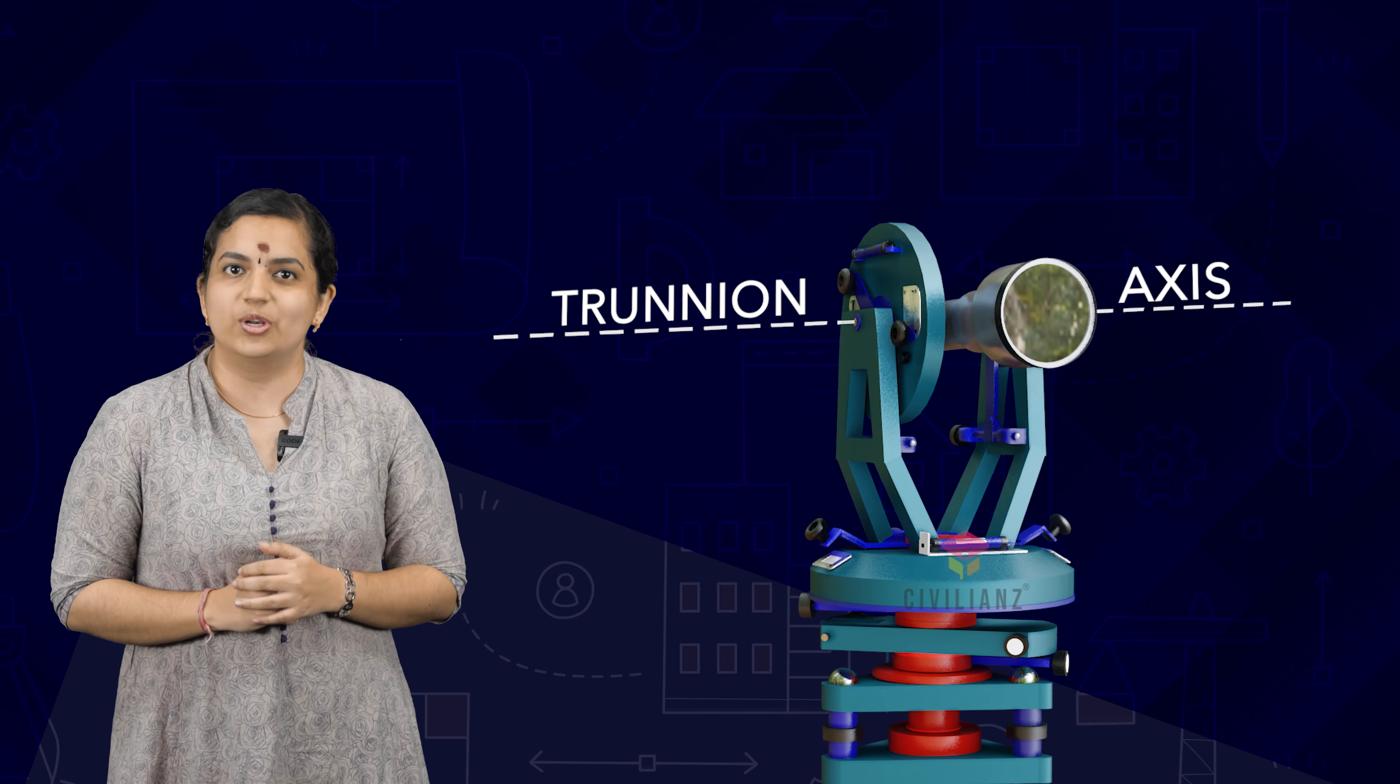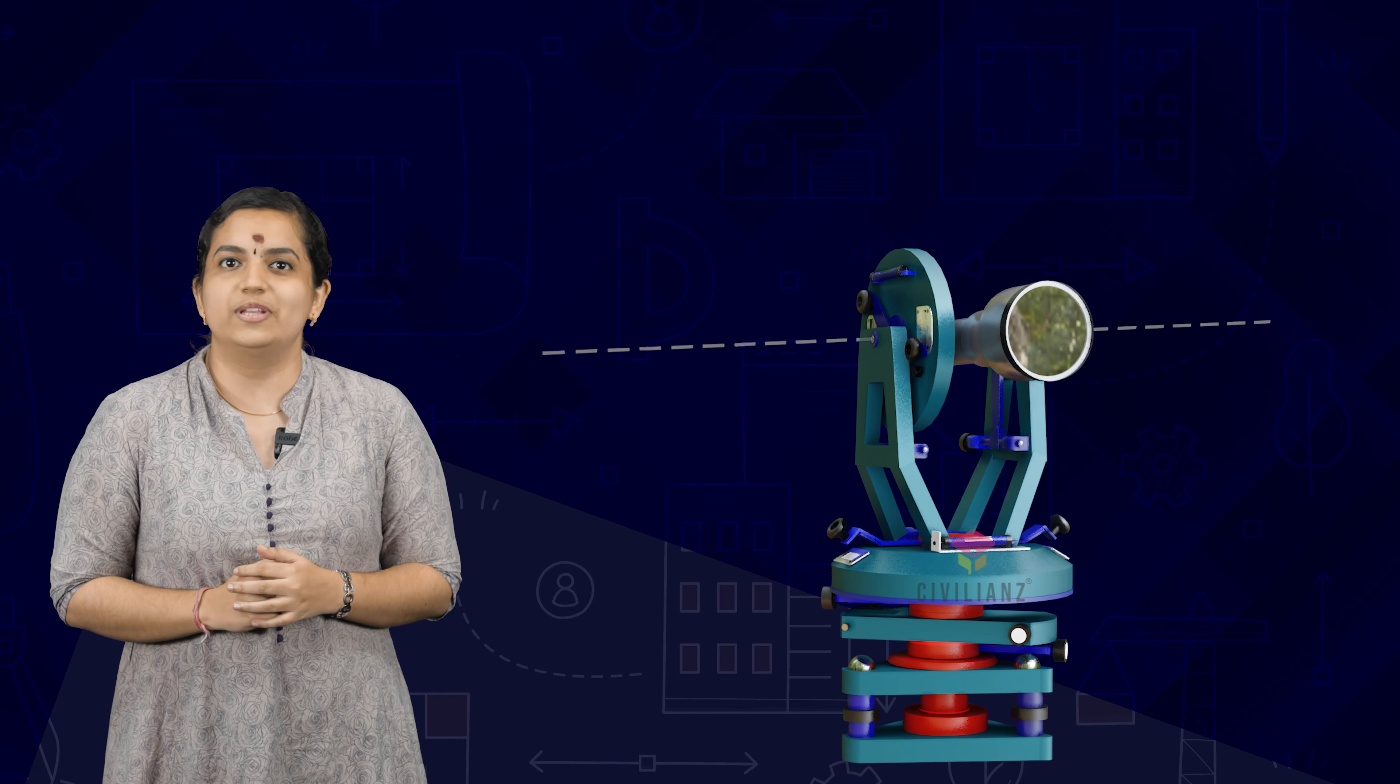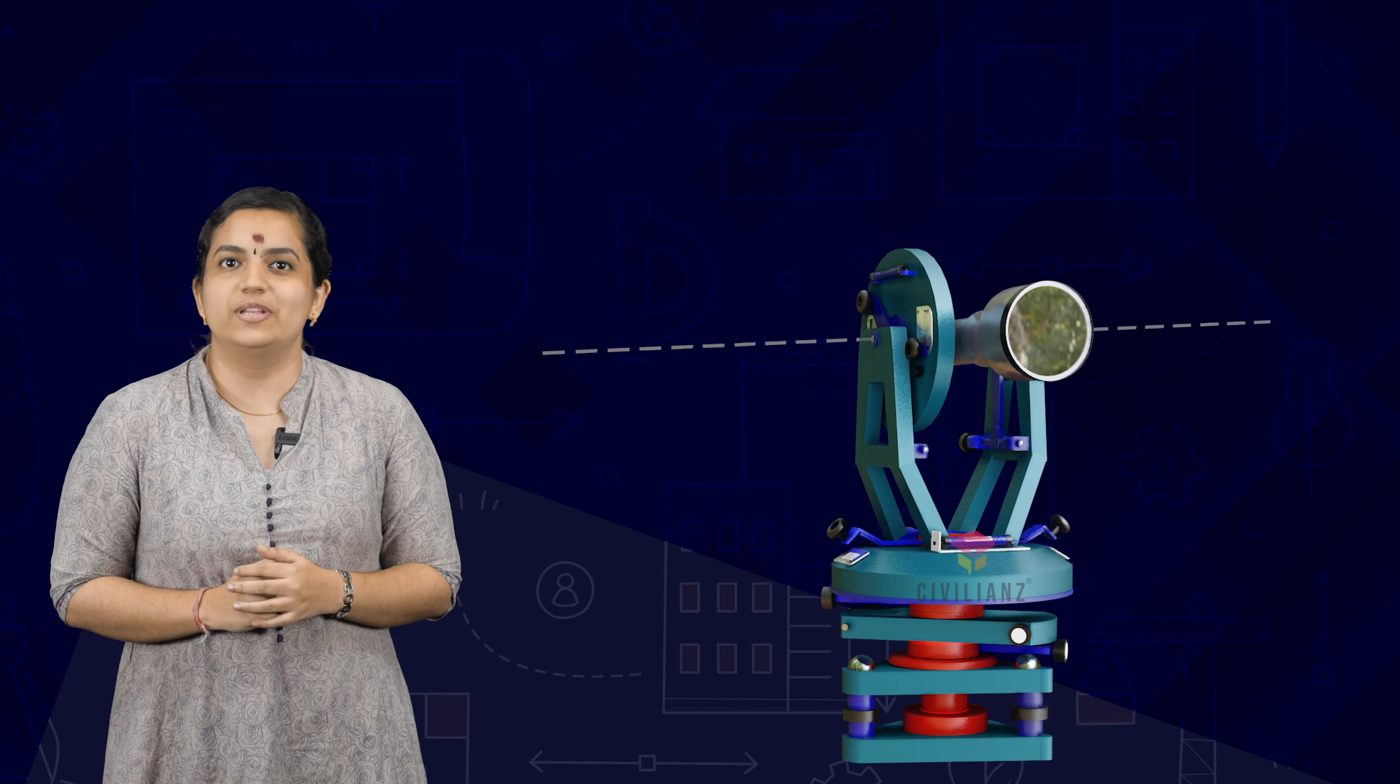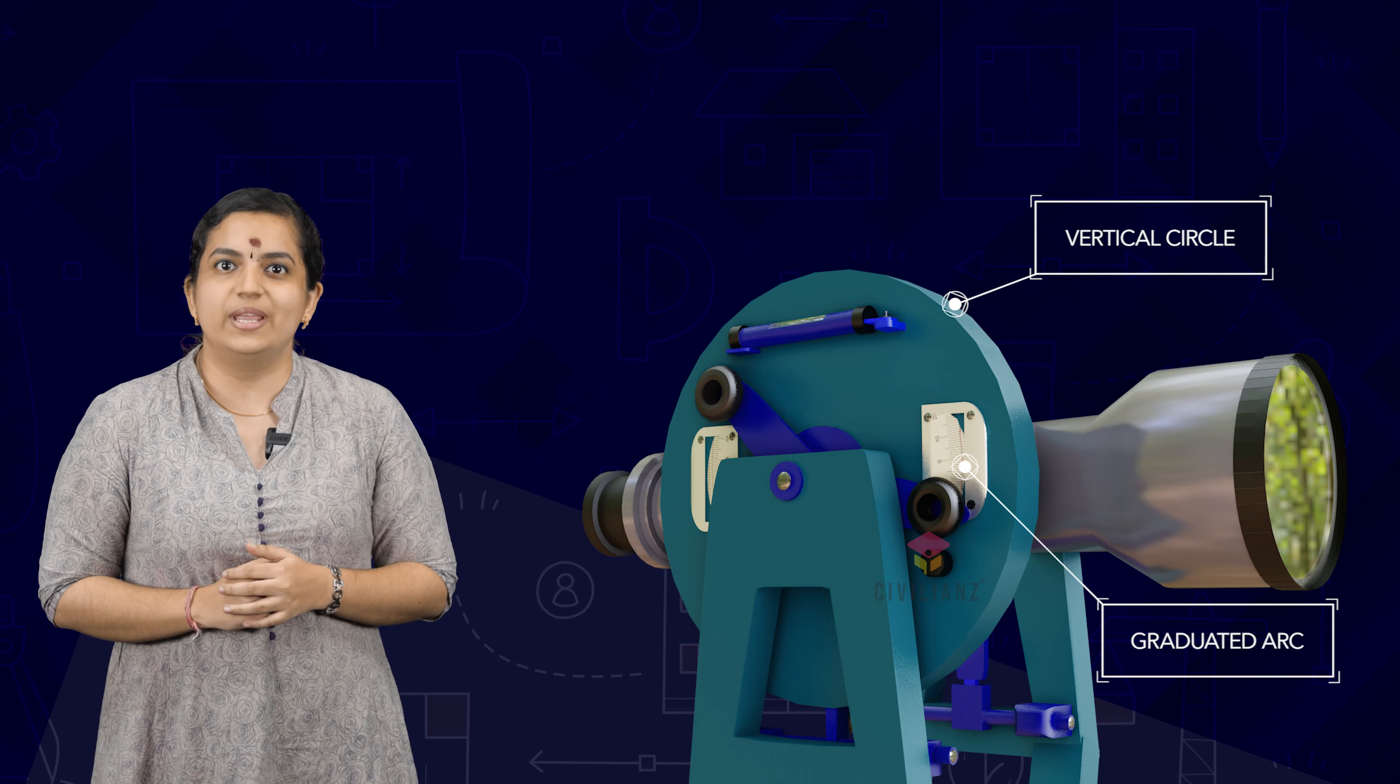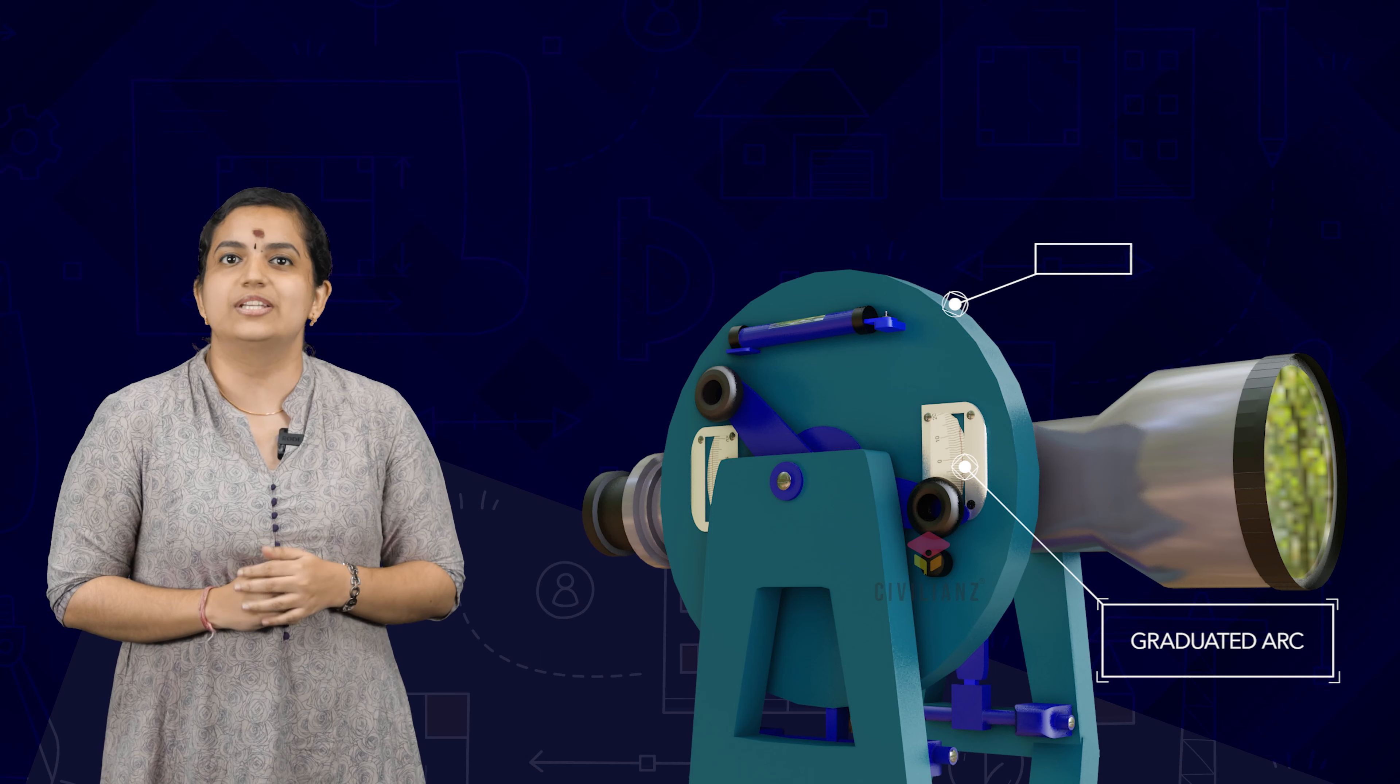What you see here is the horizontal axis or trunnion axis of the theodolite, with respect to which the telescope is mounted. The vertical circular graduated arc attached to the trunnion axis of the theodolite is called the vertical circle.